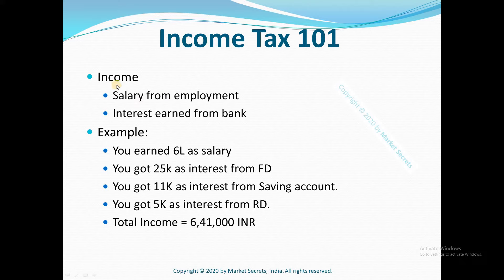Let's say you have a couple of incomes. One is your salary from your employment and second is the interest that you earn from your bank. For example, you have 6 lakhs as your salary from your employment, and in addition to that you have 25,000 rupees as interest from FD, 11,000 rupees as interest from your savings account, and 5,000 rupees as interest from your RD. So in total, your total income will be 6 lakh 41,000 rupees.